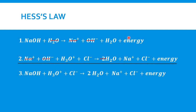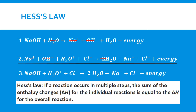Our energy is represented here as the enthalpy change in these reactions. By adding these reactions and also adding our enthalpy changes, we end up with the overall enthalpy change for that particular reaction. This is called Hess's law of heat summation, or just Hess's law. The overall enthalpy change for a reaction is equal to the sum of the enthalpy changes for the individual steps in the process — step one plus step two to give you the overall reaction.